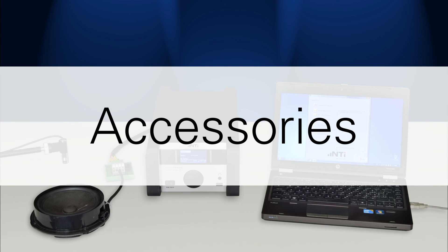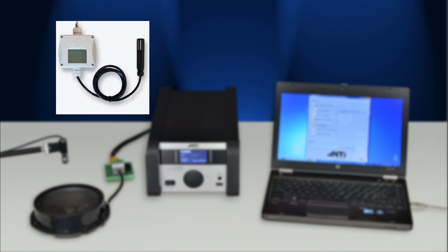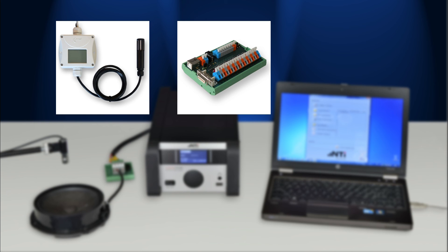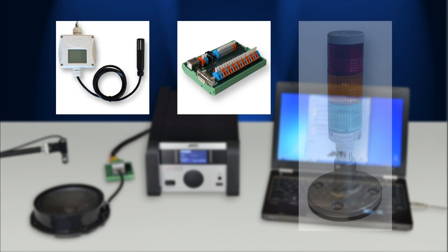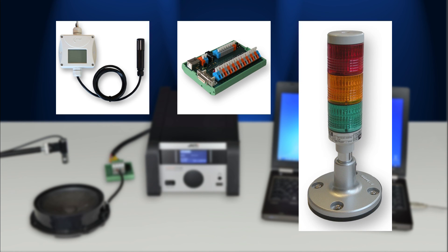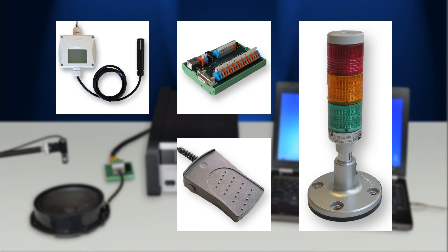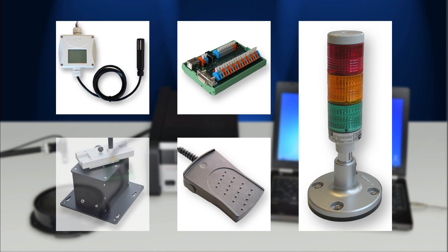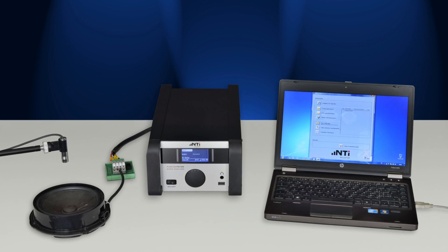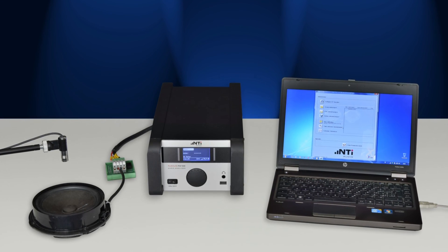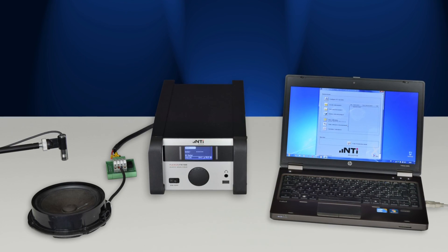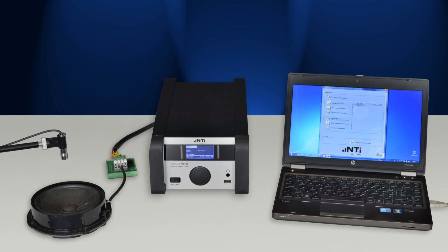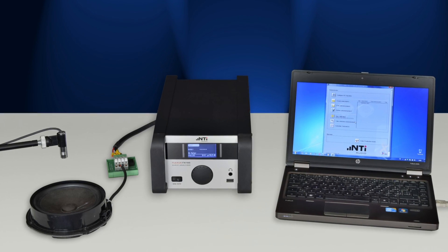There are various accessories available, such as a temperature and humidity sensor, a connection board to the built-in digital I/O interface, a stack light to indicate measurement results, a foot switch to trigger a measurement, as well as a turntable to perform directivity measurements. The FX100 loudspeaker QC system is a sophisticated and complete solution. With its different modules and versions, it is the perfect tool for any loudspeaker quality control application.